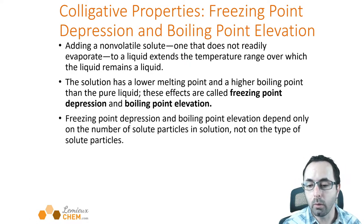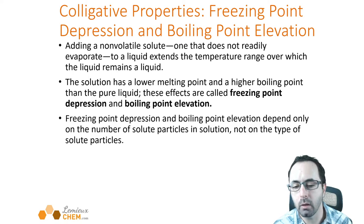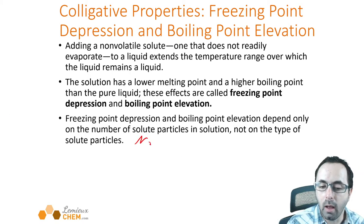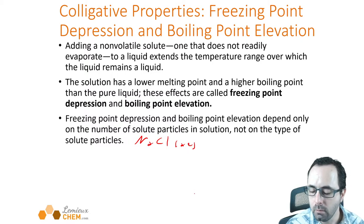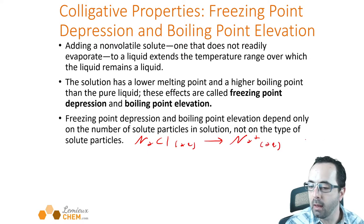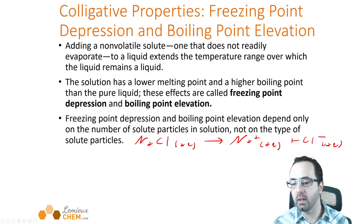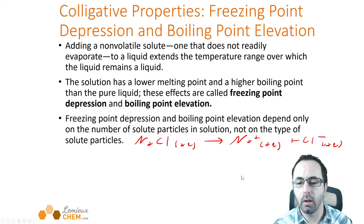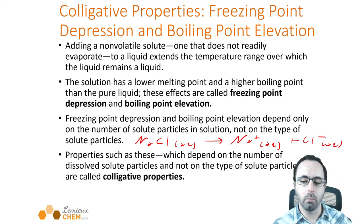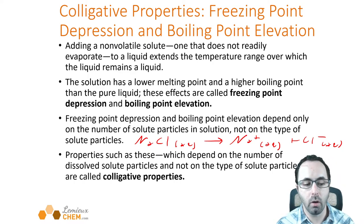This only depends on how many solute particles are in solution, not the type of solute particles. If you dissolve sodium chloride in water, it will make two particles — a sodium ion and a chloride ion. When you put in one mole of sodium chloride, you actually get two moles of particles. Whereas for molecular substances, they don't do that. Properties that depend on the number of dissolved solute particles are called colligative properties. Freezing point depression and boiling point elevation are examples of that.